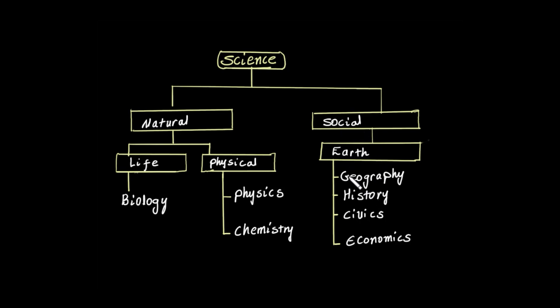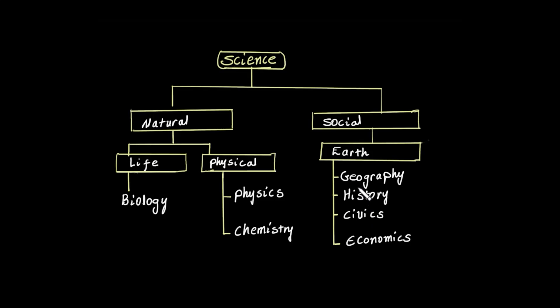Social sciences are also a branch of science. The social sciences include geography, history, civics, economics, and sociology.